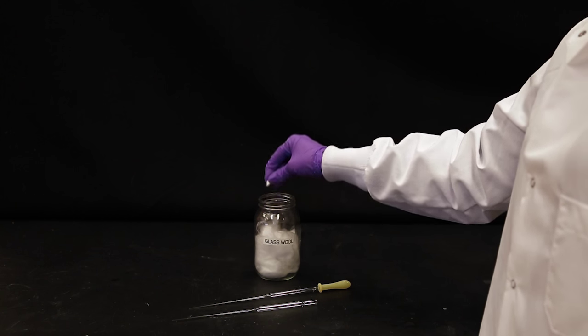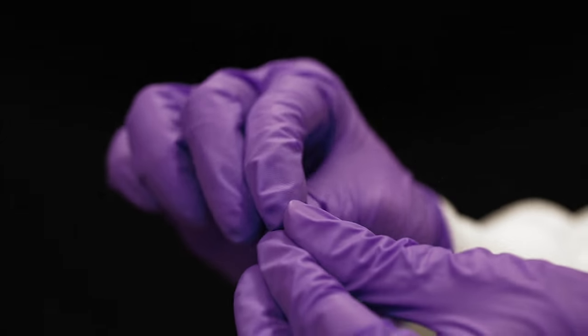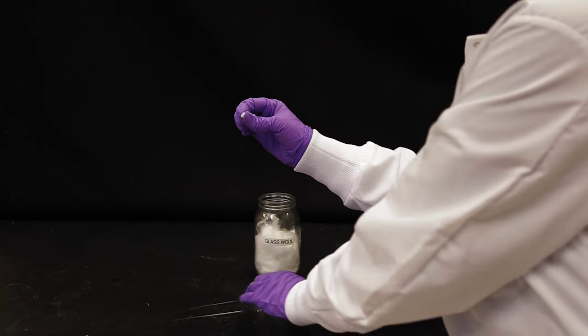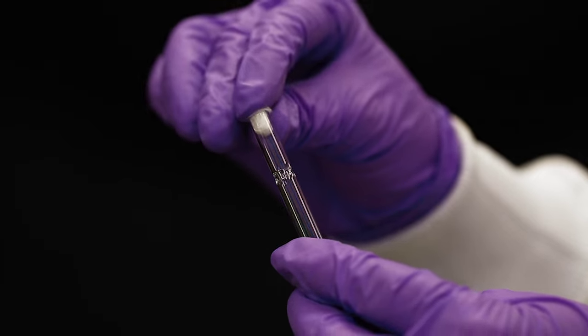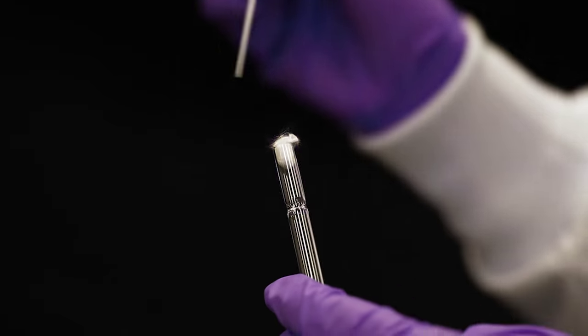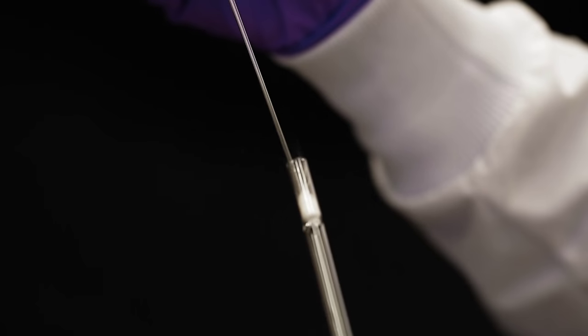Roll a small amount of glass wool into a ball. With the help of the second pipette, push the small ball of glass wool into the Pasteur pipette all the way to the narrower point in the pipette.